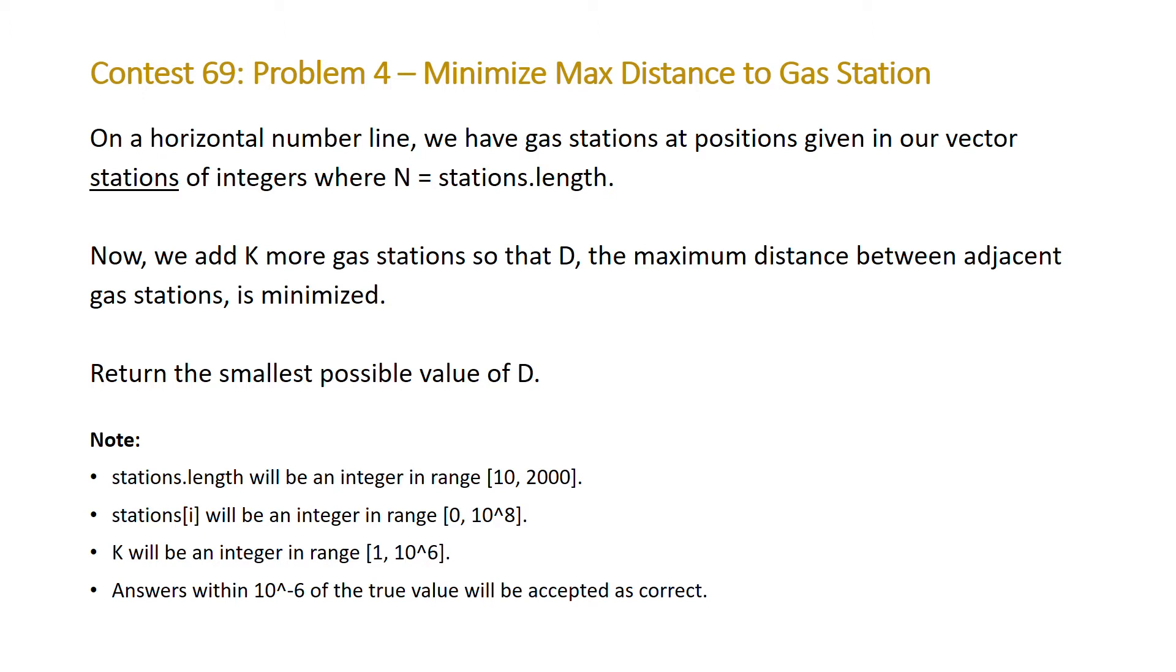Note that the number of stations will be in the range 10 to 2000. The integer range for the positions of our stations will be between 0 and 10 to the power of 8. And k, the number of additional gas stations that we are adding, will be in the range 1 to 10 to the power of 6.